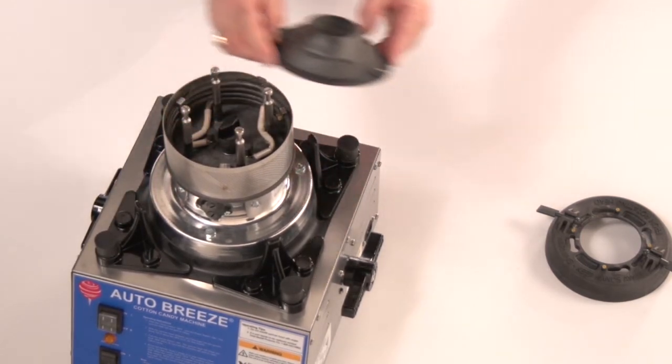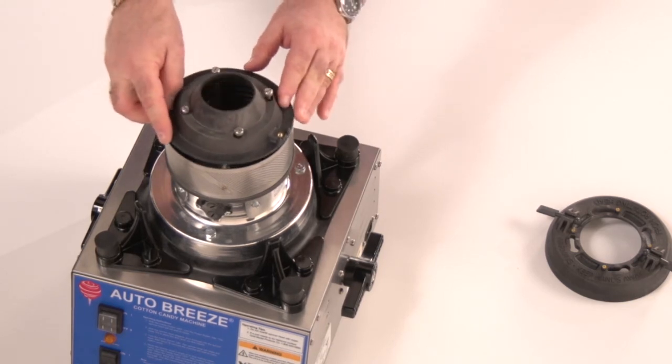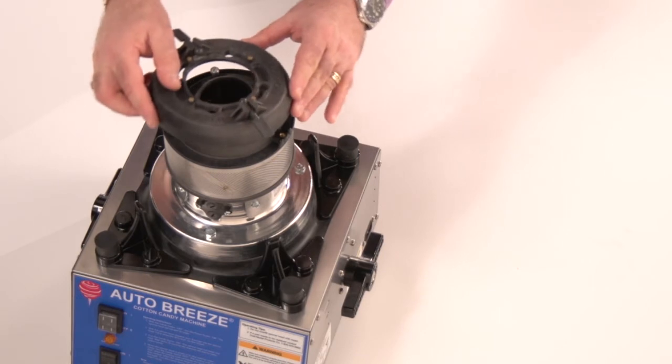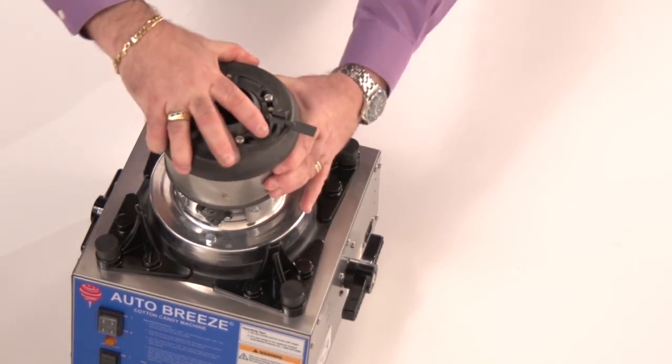Next we will reinstall our spinner cap by sliding it over those four bolts, then our top cap is reassembled and tightened.